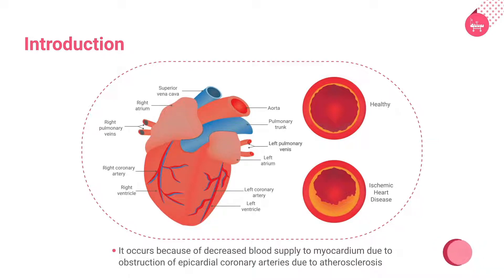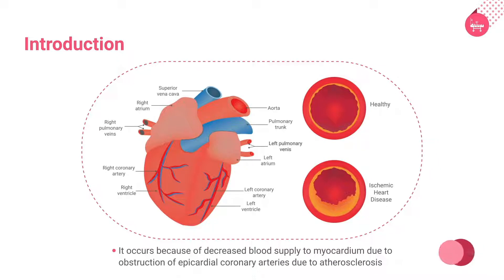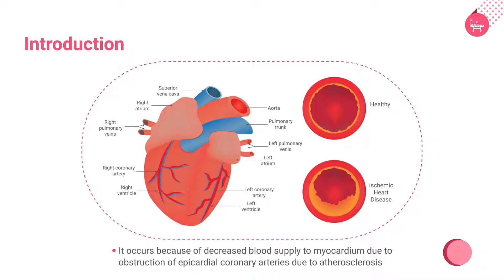Most commonly, ischemic heart disease occurs because of decreased blood supply to the myocardium, due to the obstruction of epicardial coronary arteries. The obstruction occurs due to atherosclerosis — that is, the narrowing of arteries due to deposition of plaques of fatty material on the inner walls of the arteries.